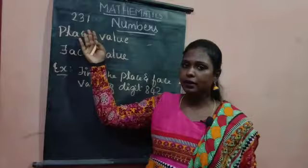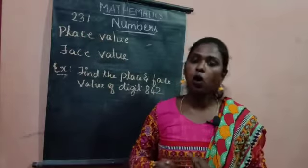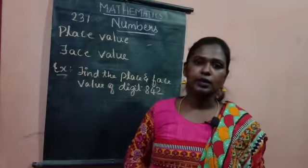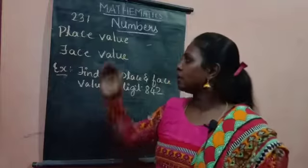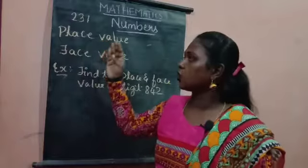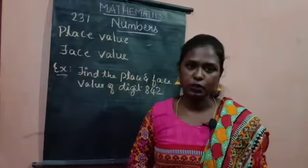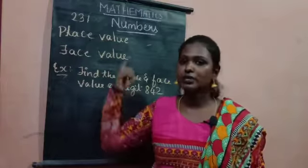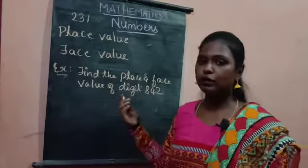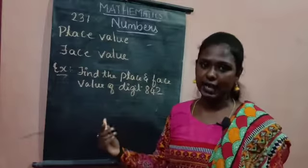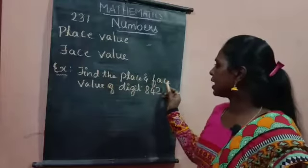The face value of a number does not change — it is constant regardless of its place. So place value is totally different from face value. Let us now see this through an example: find the place value and face value of the digits in eight hundred and forty-two.